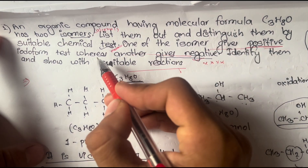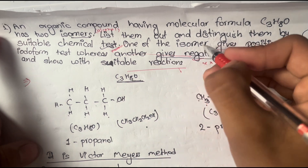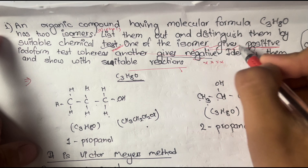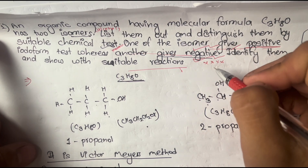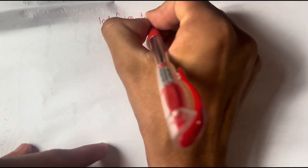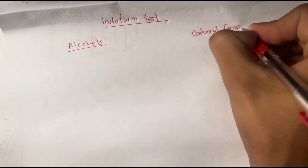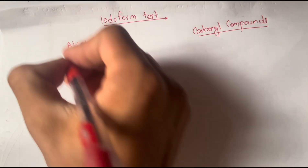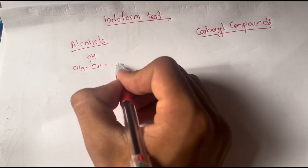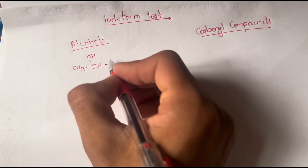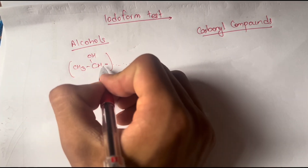Now for the iodoform test: the question states one isomer gives a positive iodoform test while another gives a negative result — identify them with suitable chemical reactions. The iodoform test is positive for alcohols and carbonyl compounds containing the CH3-CH(OH) group or the methyl keto group (CH3-C=O). Ethanol, CH3 group, and 2-propanol all fall into this category.